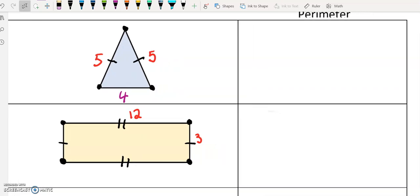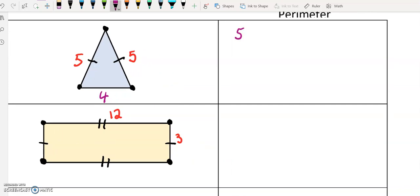Now, if I were to find the perimeter of this triangle, all we would really do is say five plus five plus four would give me my answer of 14. So again, just adding up those sides.